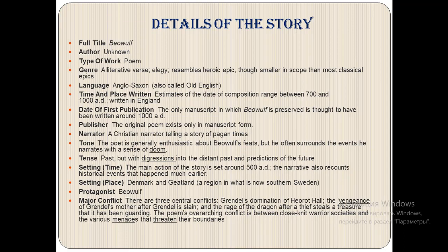Details of the story: Full title — Beowulf. The author is unknown. Type of work is a poem. Genre — alliterative verse, elegy, resembles heroic epic, though smaller in scope than most classical epics. Language — it is written in Anglo-Saxon, also called Old English. Time and place written — estimates of the date of composition range between 700 and 1000 AD, written in England. Date of first publication — the only manuscript in which Beowulf is preserved is thought to have been written around 1000 AD. Publisher — the original poem exists only in manuscript form. Narrator — a Christian narrator telling a story of pagan times. Tone — the poet is generally enthusiastic about Beowulf's feats, but he often surrounds the events he narrates with a sense of doom. Tense — written in past tense, but with digressions into the distant past and predictions of the future.